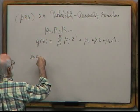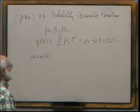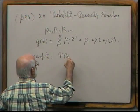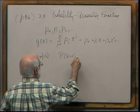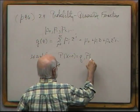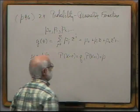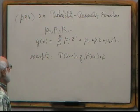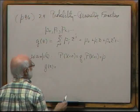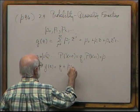The generating function for the Bernoulli variable would be: p0 is q, p1 is p, so it would be q + pz. At the moment there's no real point to that — it just illustrates the definition.